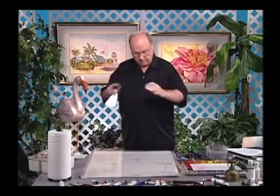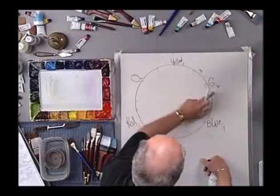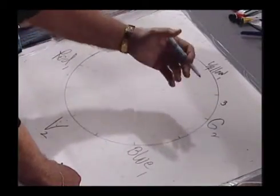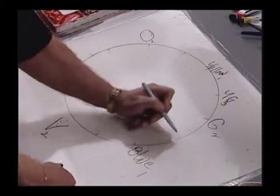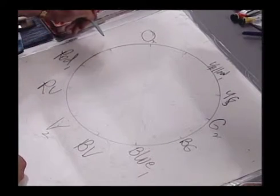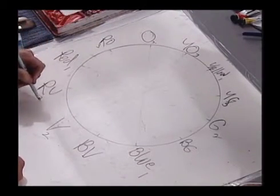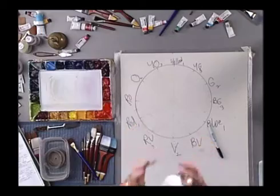You already knew there were primaries and there were secondaries. Next we have the ones where you add a two and a one together, you get a three. The word used for this is tertiary, which means third in order — some people call them intermediate colors. This one is yellow-green, here we've got blue-green, blue-violet, red-violet, red-orange, and yellow-orange. Each of those are threes — tertiary colors, third in order, also called intermediates.